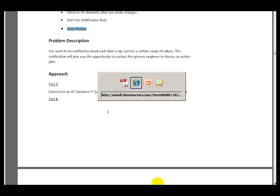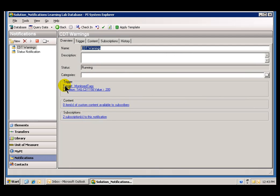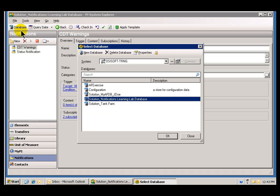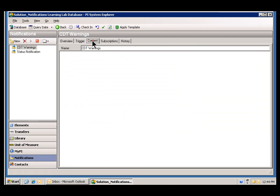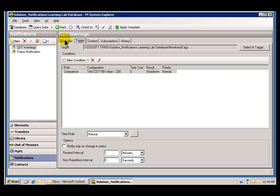If you are at a point where you would simply like to take a look at the solution, that's no problem. Our Learning Lab environment should have an option here within the AF database to look at the solution. In this case, it's solution underscore notifications Learning Lab database. You can open that up and take a look at Notifications, you can take a look at the configuration.